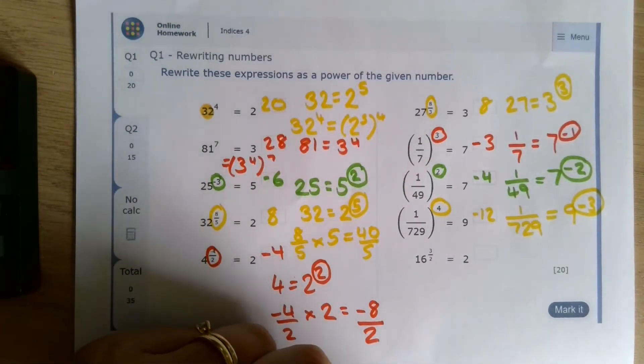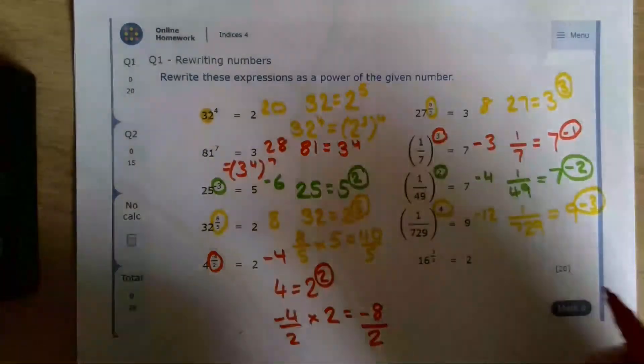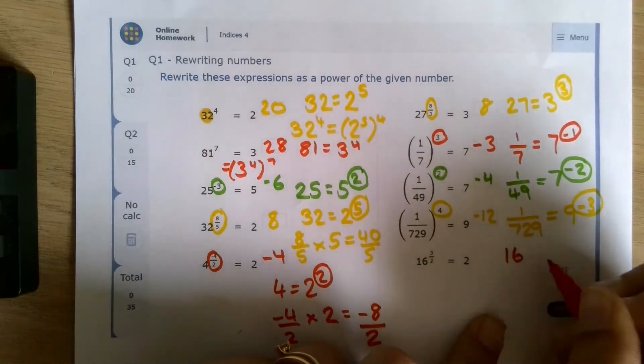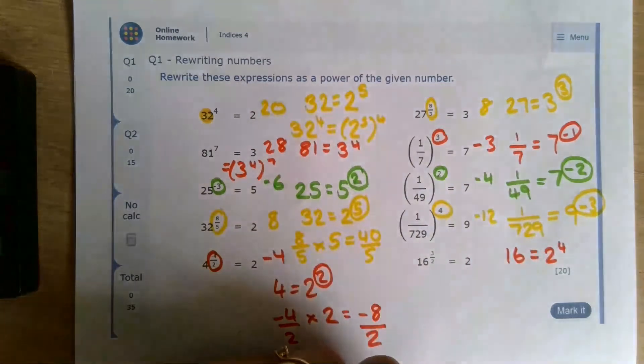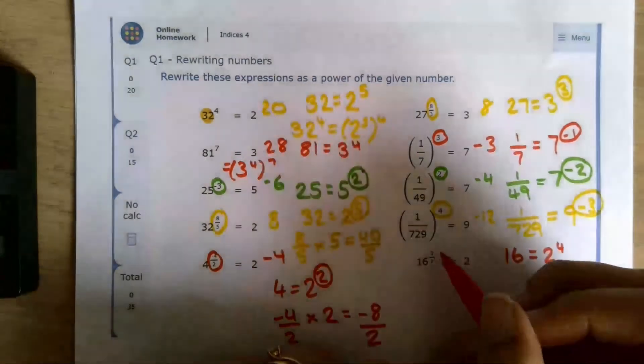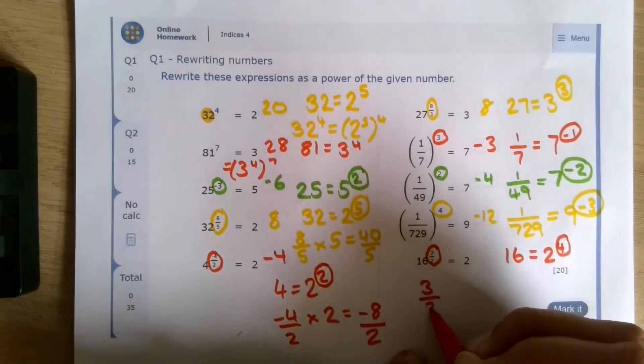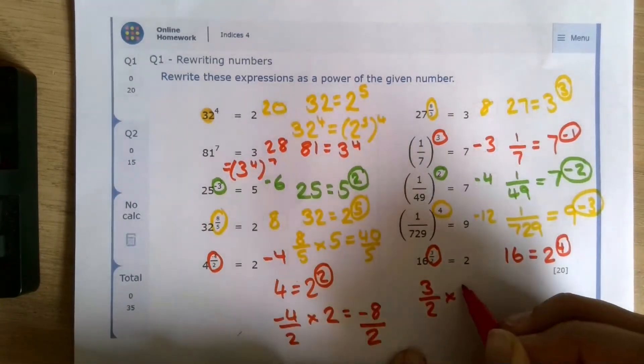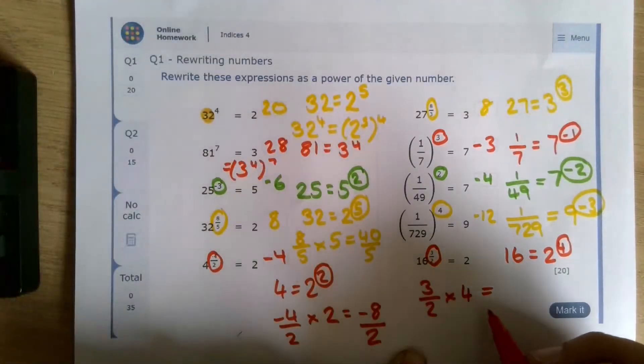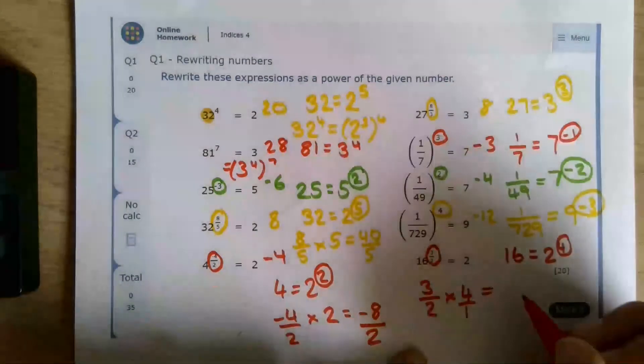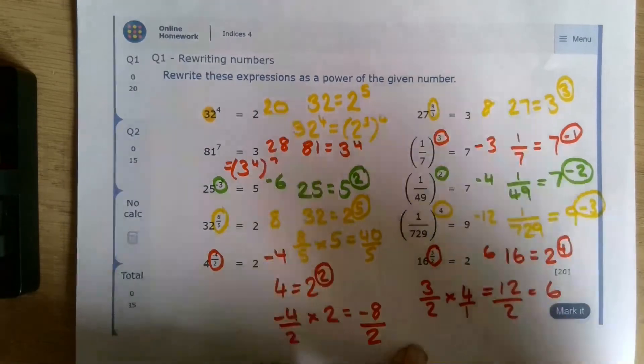And finally, 16 to the power of 3 over 2. 16 is 2 to the power of 4. 2, 4, 8, 16. So we're going to multiply these two powers. We're going to do 3 halves times by 4. Now, this one doesn't cancel out neatly as it does. So let's just multiply it. So 4 once, basically, 12 halves, which is 6. 2 to the power of 6.